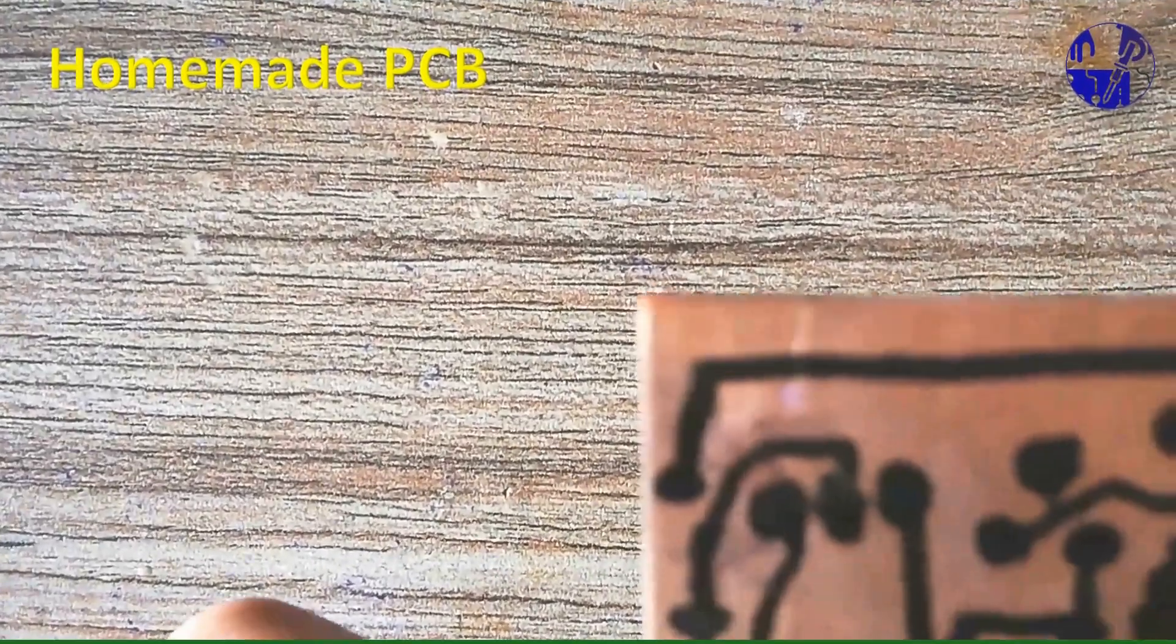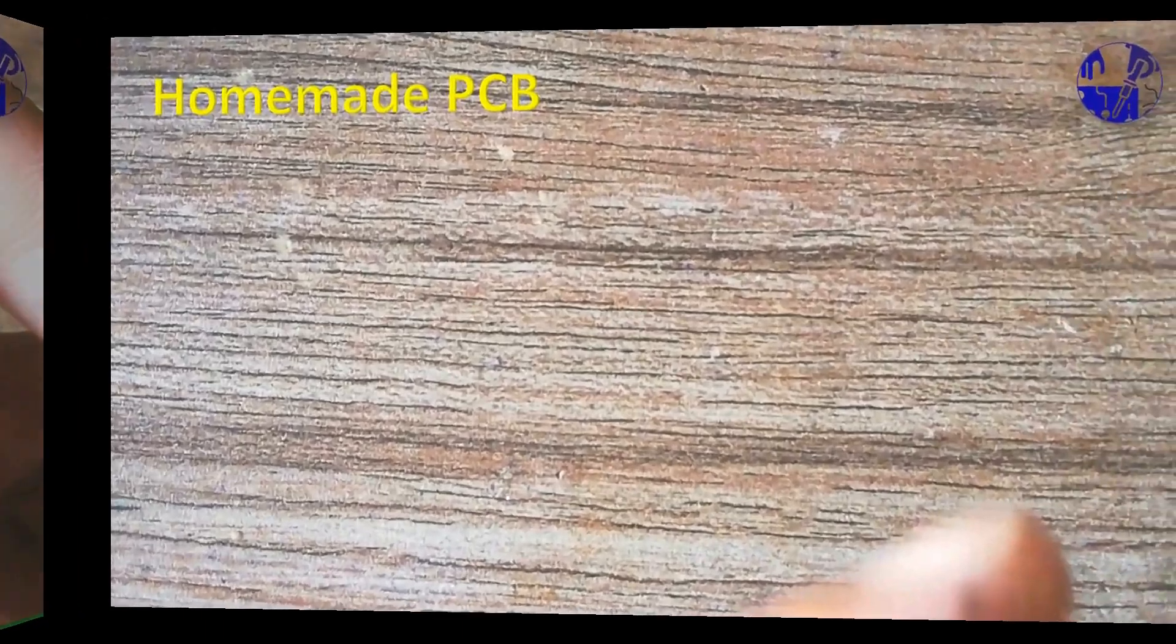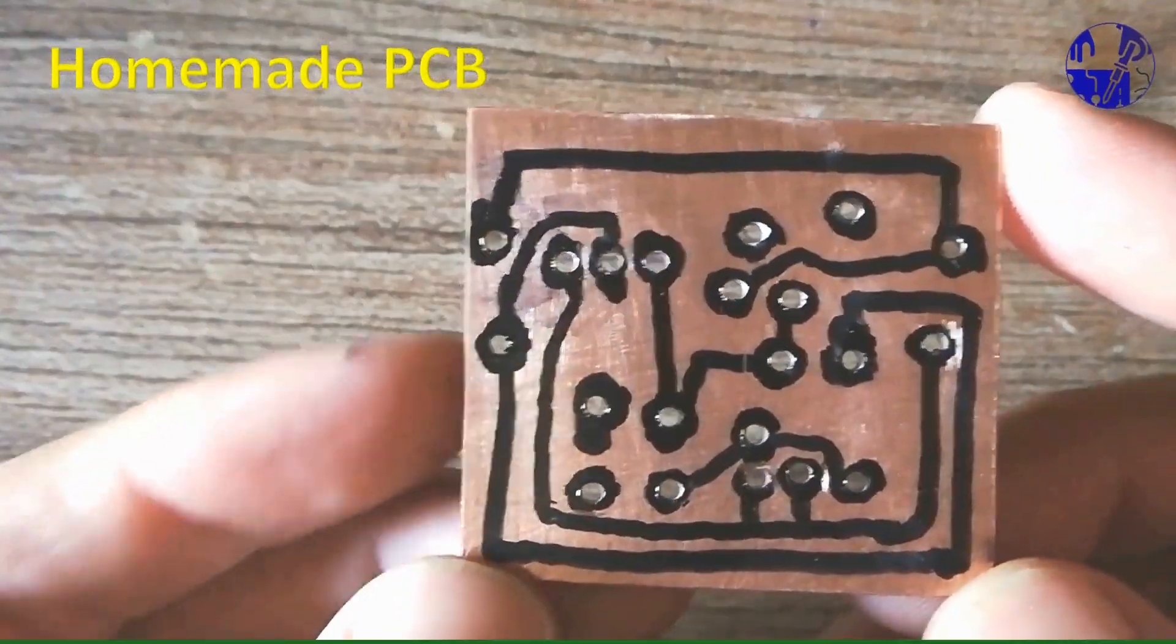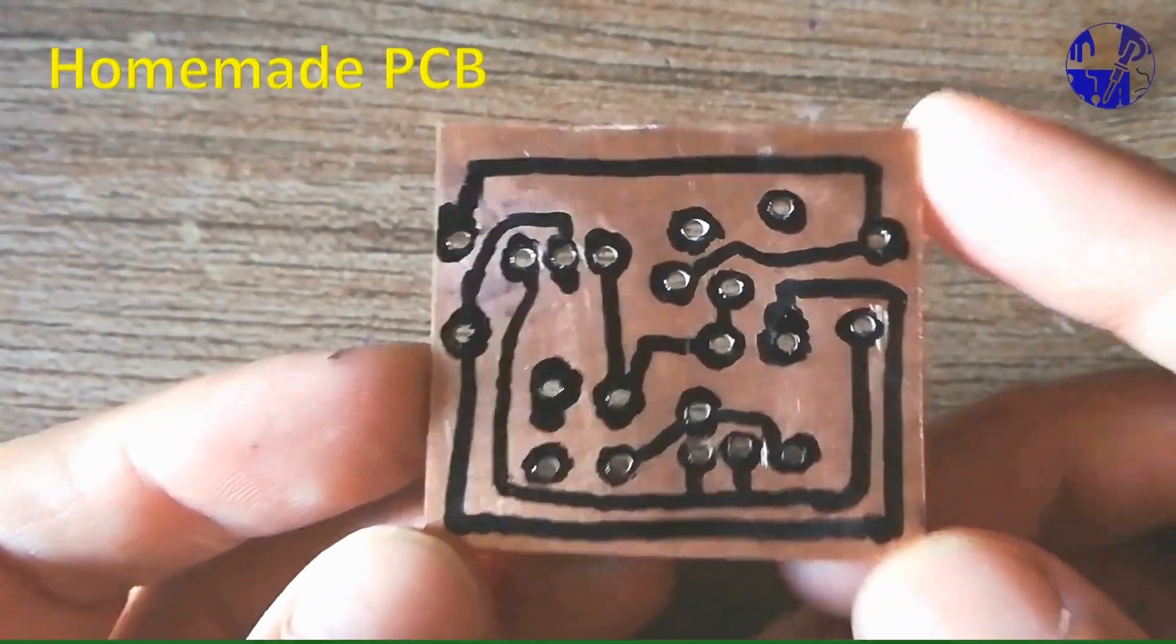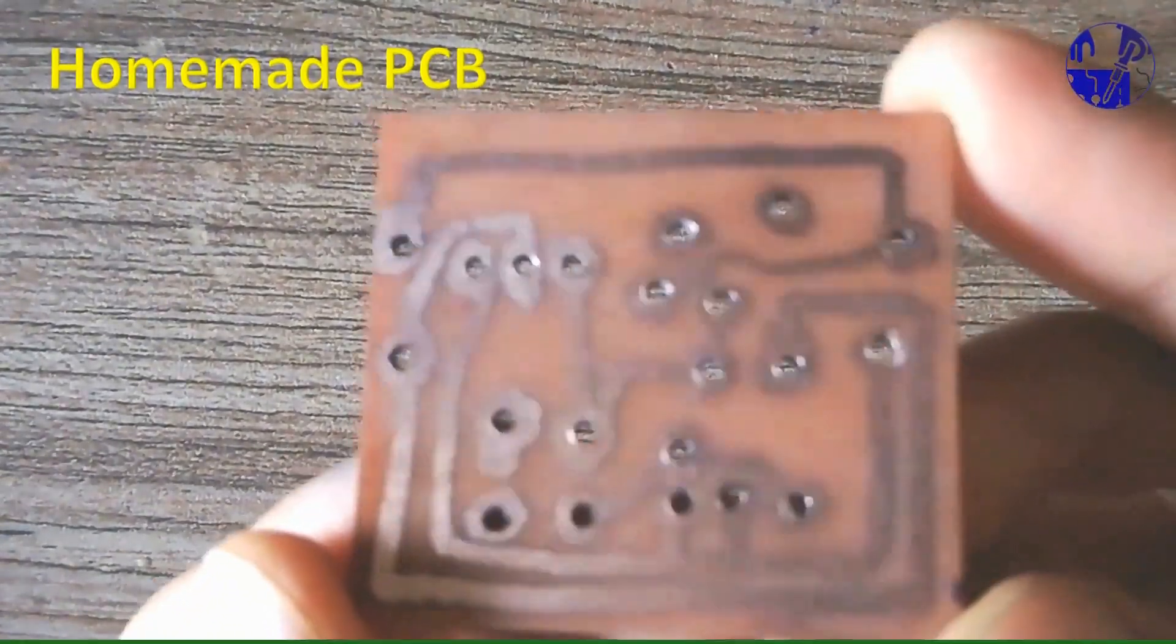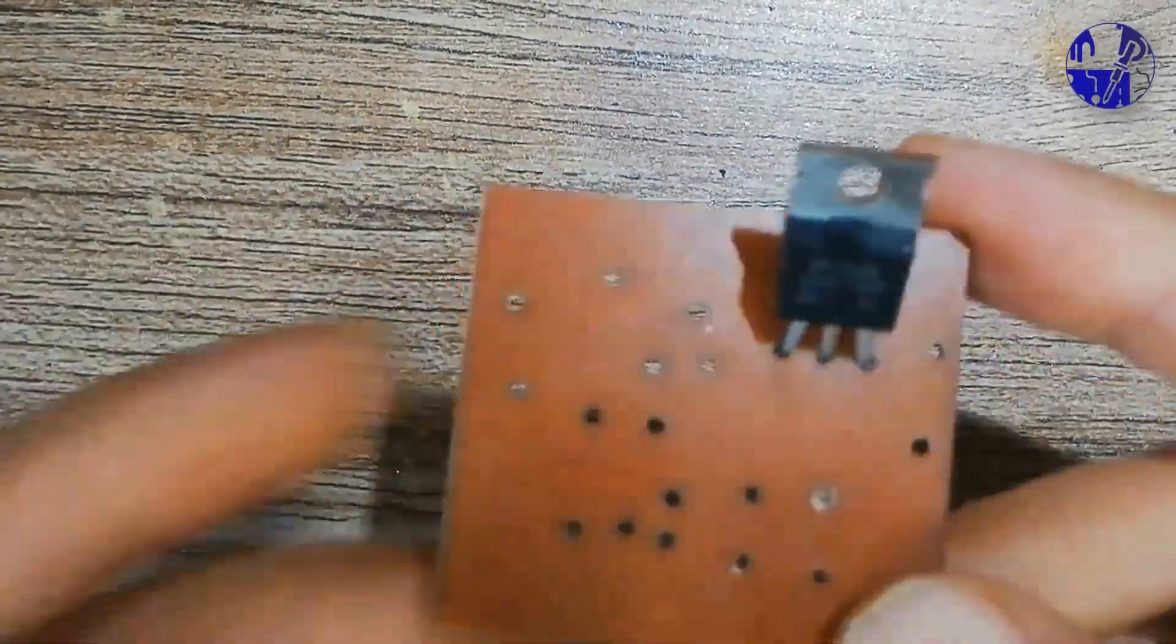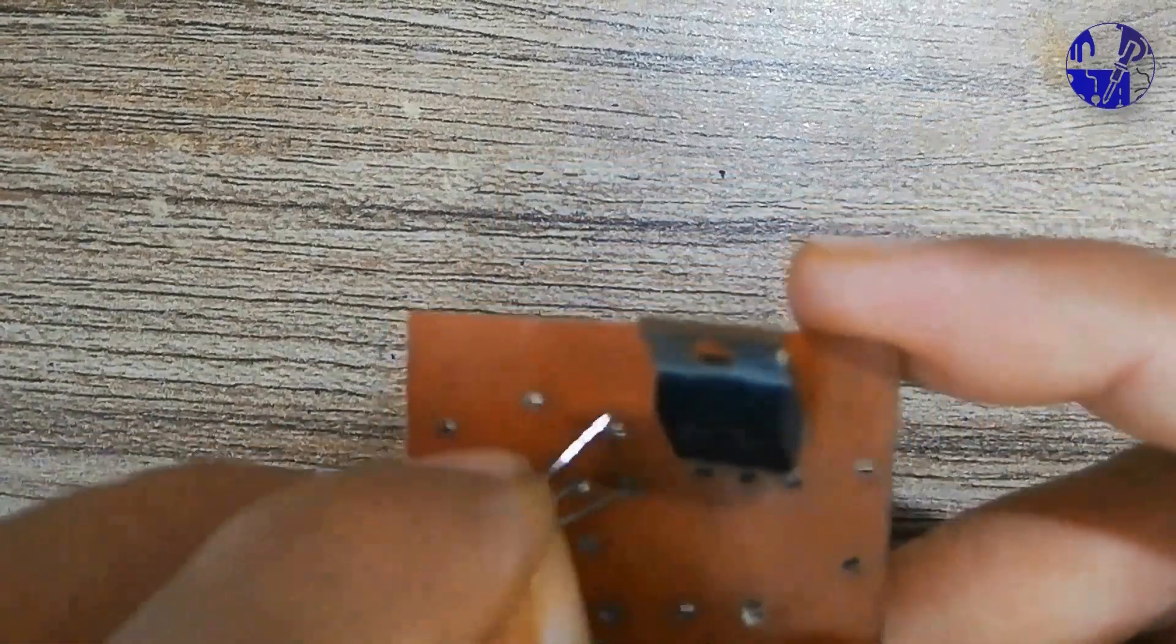Next, use a drill machine to make holes on the sheet. Finally, you will have a homemade PCB ready for your project. Properly install all the components in their designated places and ensure secure and strong connections to complete the assembly.